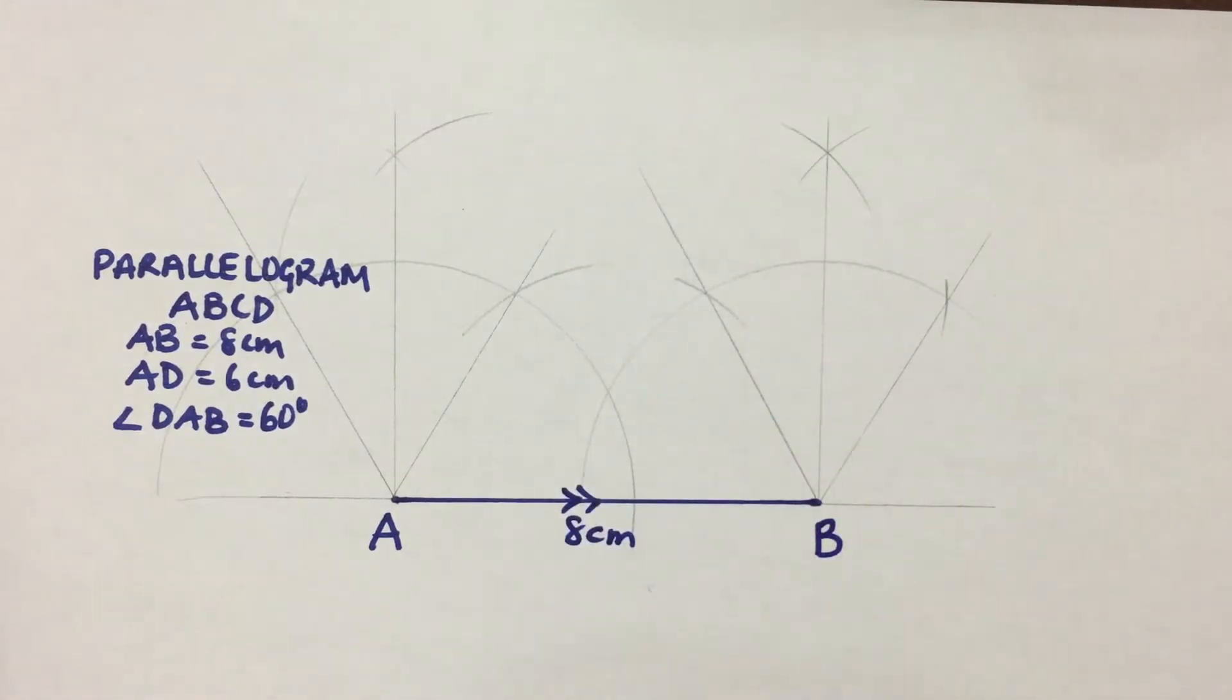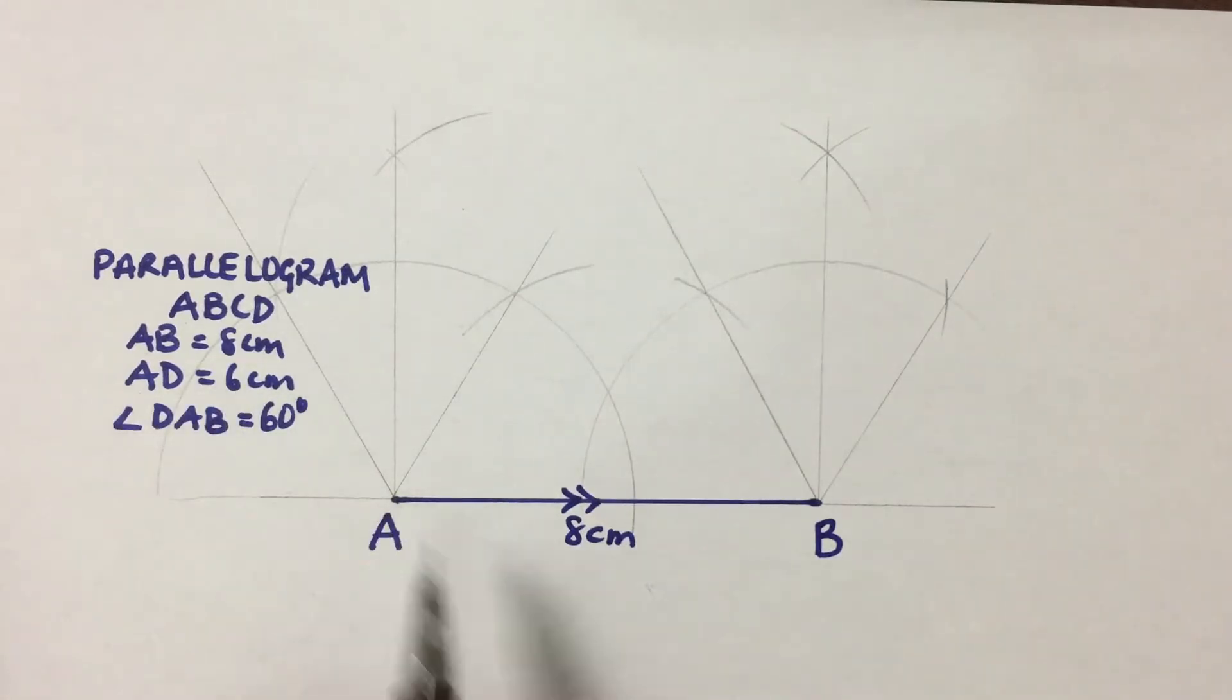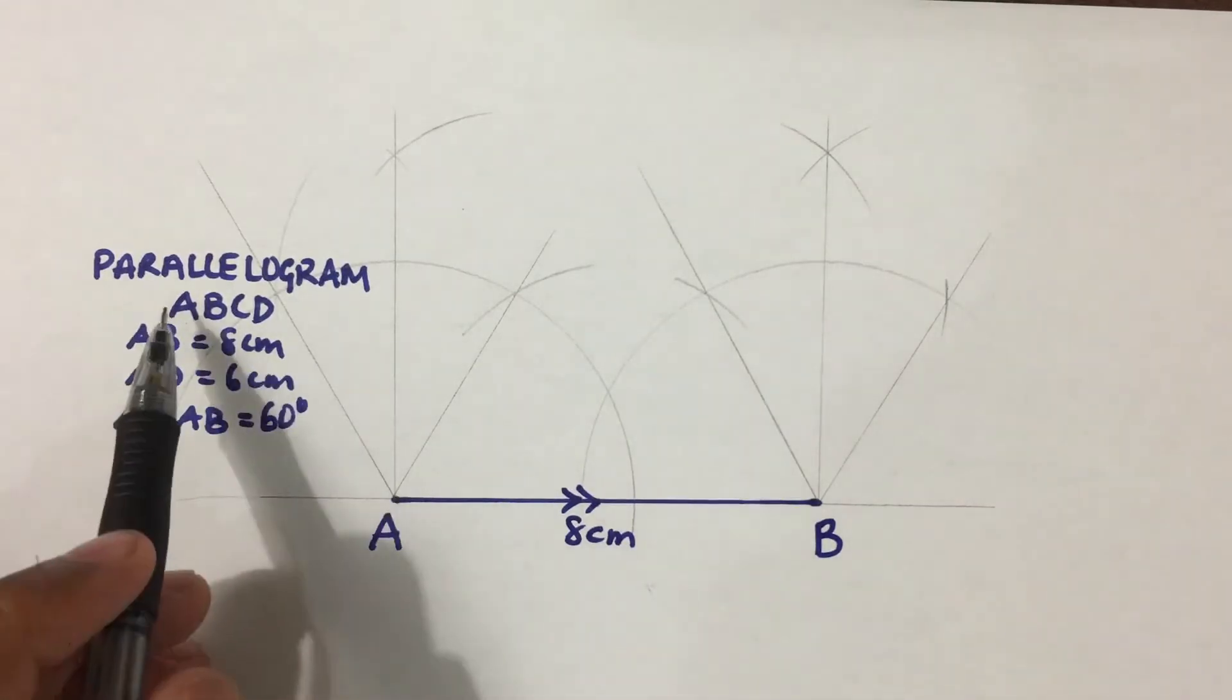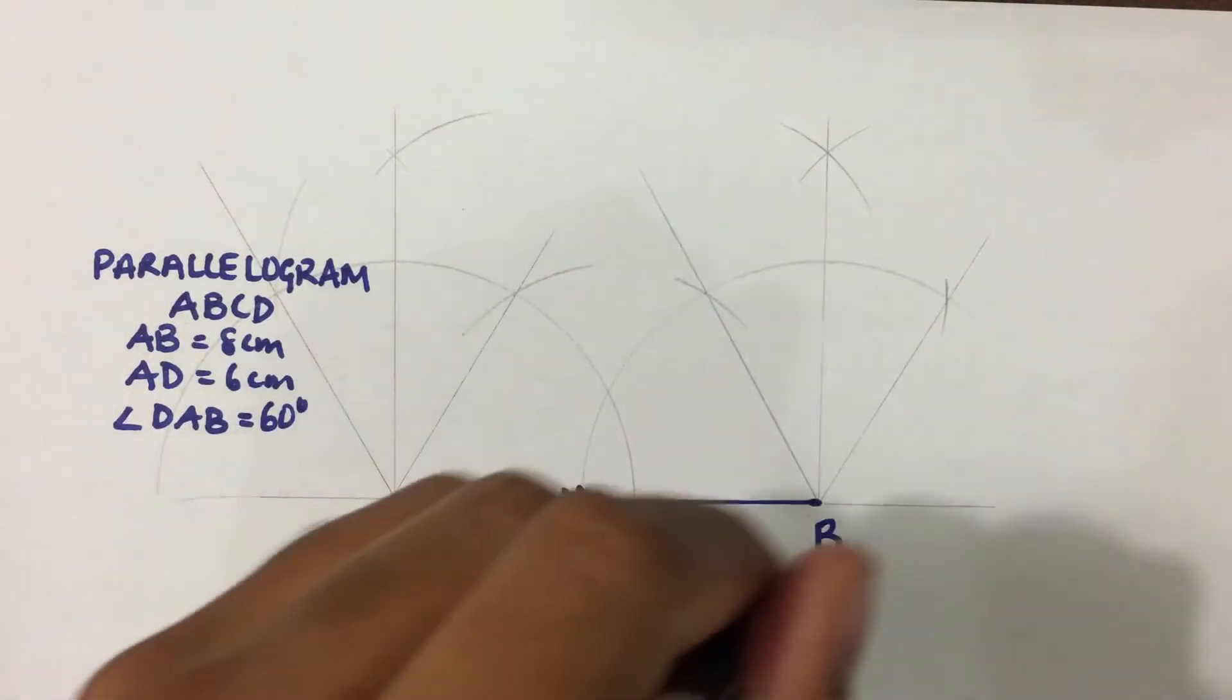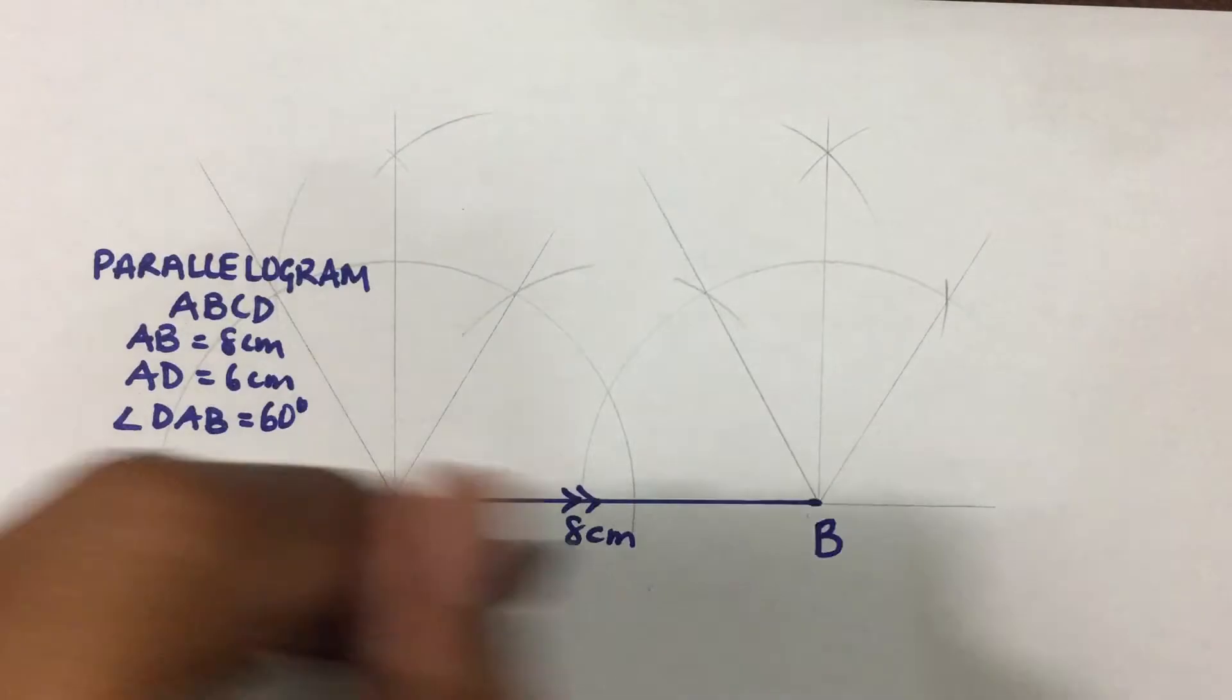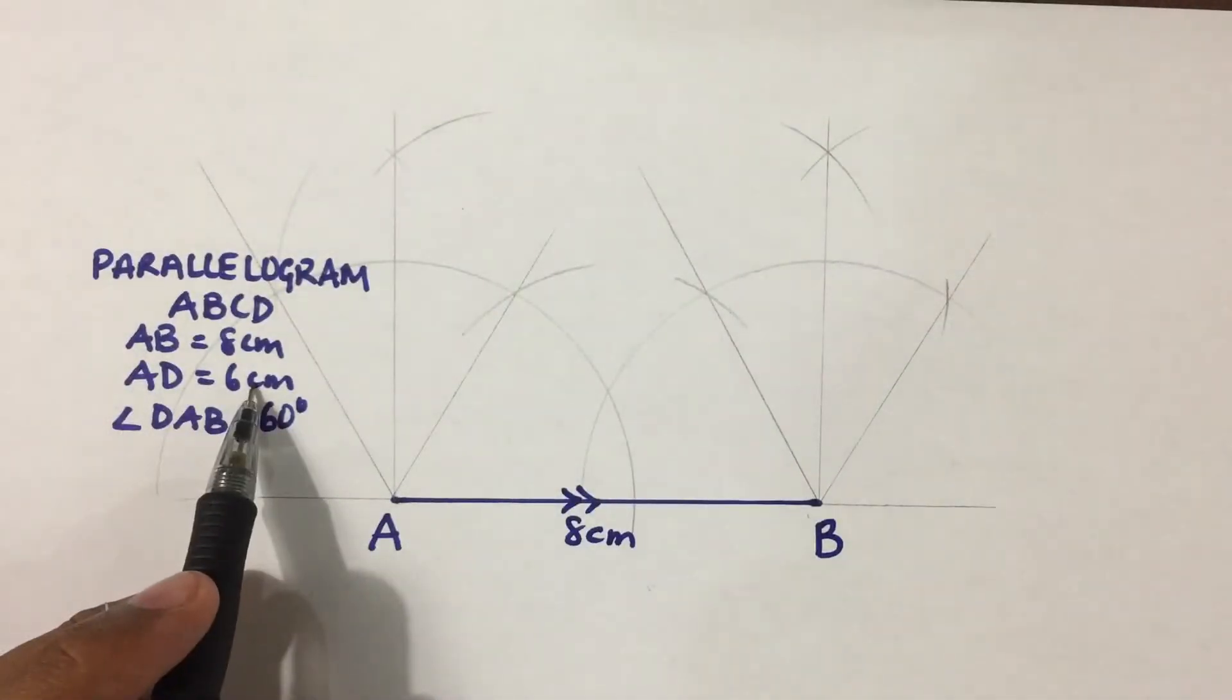Good. Now we can start. The length AD is equal to 6 centimeters. Since it's a parallelogram ABCD, we're labeling the shape anticlockwise. So A, B, C, D—D should be over here. And AD is equal to 6 centimeters.